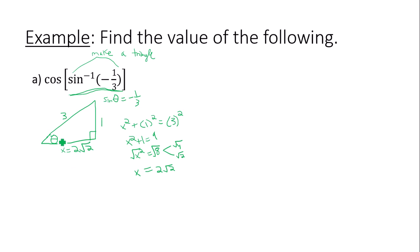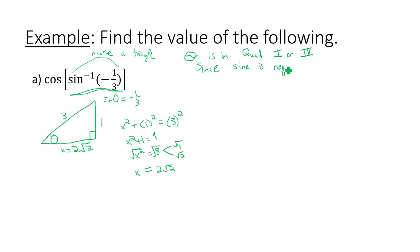Now the question is, what quadrant does this angle theta lie in? Because of the way inverse sine is designed, theta has to be in quadrant one or quadrant four — inverse sine is only defined for those quadrants. Since sine is negative, our angle theta is in quadrant four. Keep that in mind as we evaluate cosine.